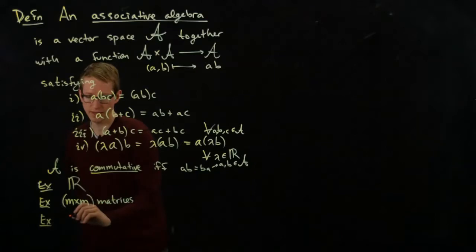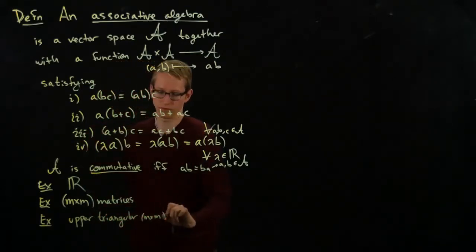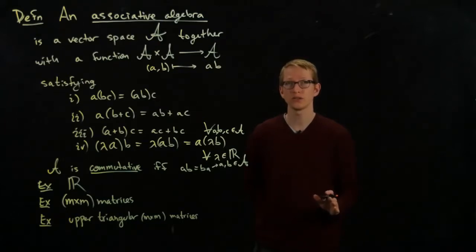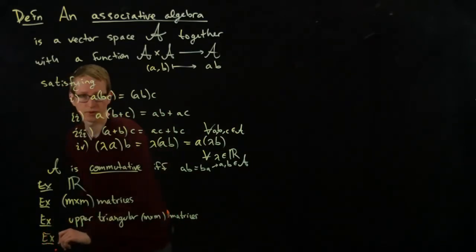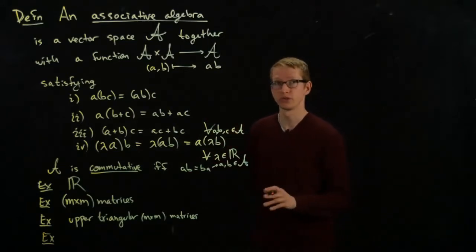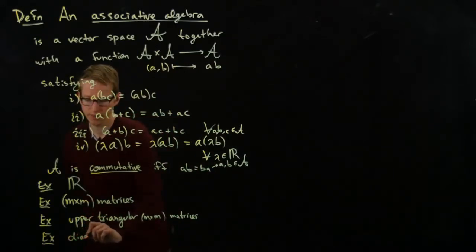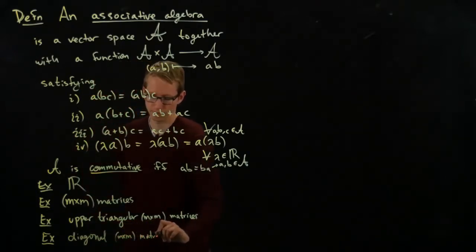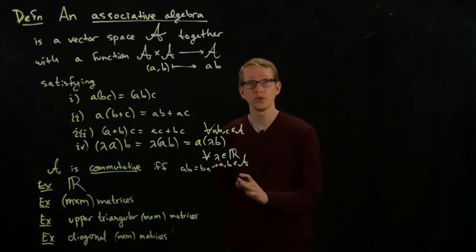A sub example of M by M matrices is, for instance, upper triangular M by M matrices. And the reason is because if you take an upper triangular matrix and you multiply it by another upper triangular matrix, you still get an upper triangular matrix. Diagonal M by M matrices as well work. Here the multiplication is rather simple. And in fact, diagonal matrices form a commutative subalgebra.